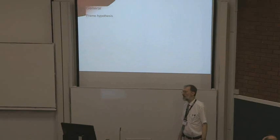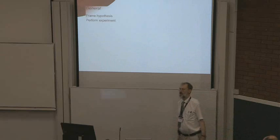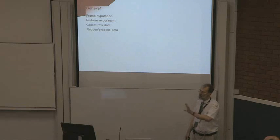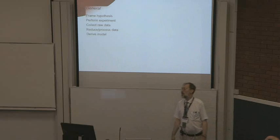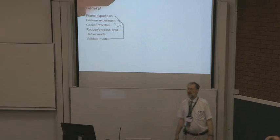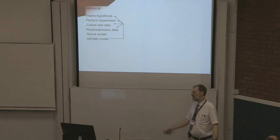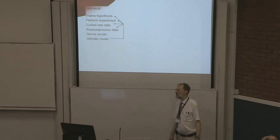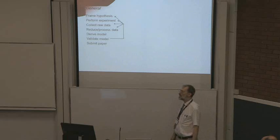This paradigm isn't necessarily applicable everywhere, but there are certain practices within science for which it is appropriate. You frame a hypothesis, and to test the hypothesis you perform some experiment. That experiment typically generates raw data that you have to reduce or process in order to make sure it's in a form proper for your onward analysis. From that reduced data you apply some thought, derive a model, and if you're a good scientist, you validate that model. Eventually you converge on a model you want to convey to colleagues — traditionally by submitting a paper in a scholarly journal.